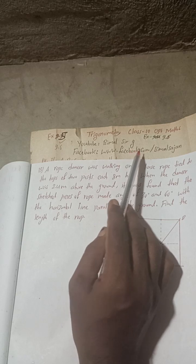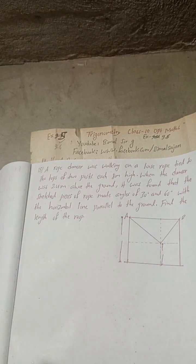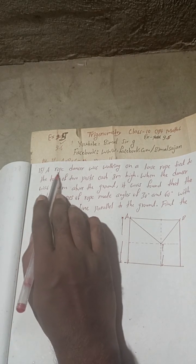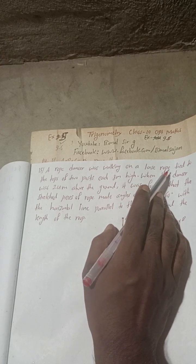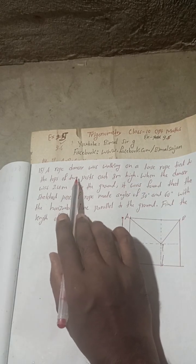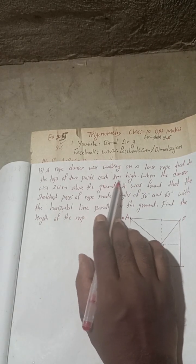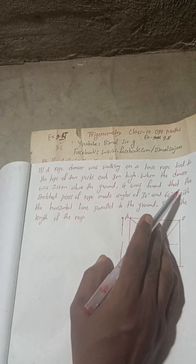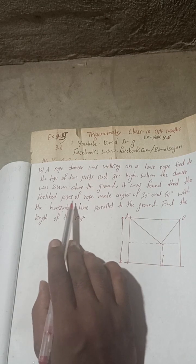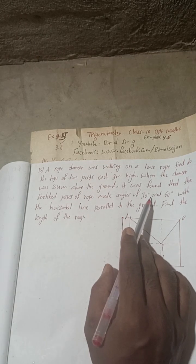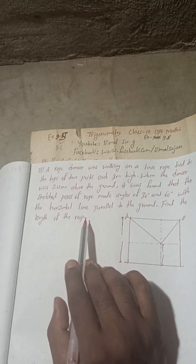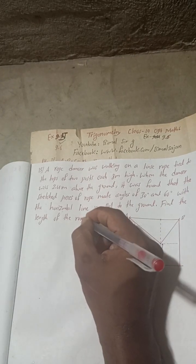Now let's begin this solution. A rope dancer was walking on a loose rope tied to the tops of two posts, each 8 meters high. When the dancer was 2.4 meters above the ground, it was found that the stressed piece of rope made an angle of 30 degrees and 60 degrees with the horizontal line parallel to the ground. Find the length of the rope.